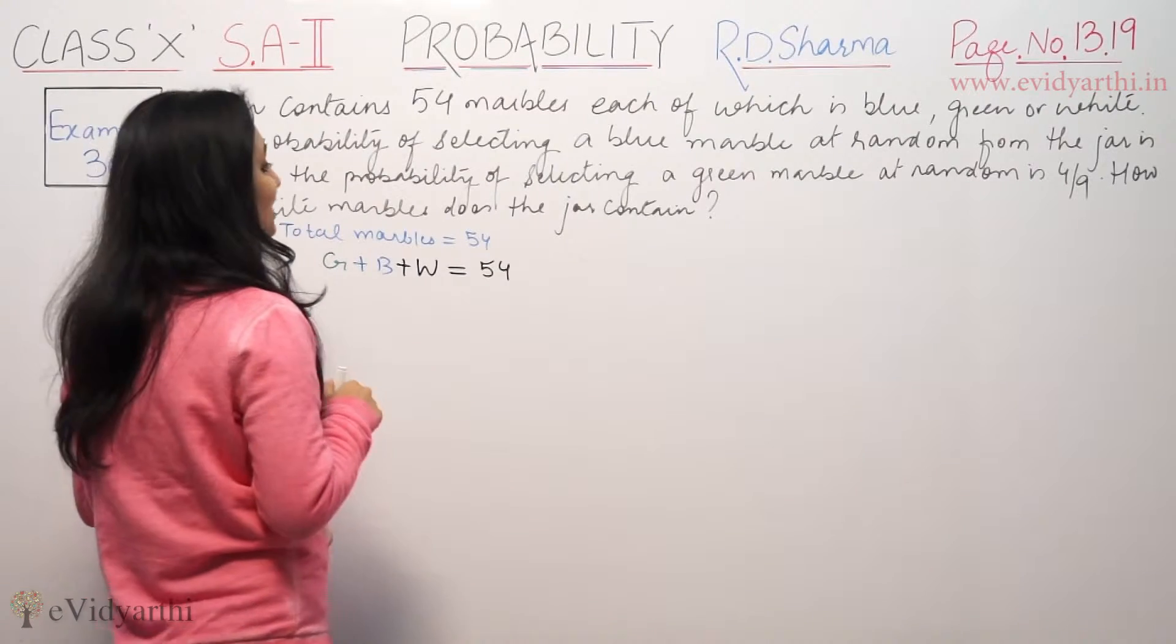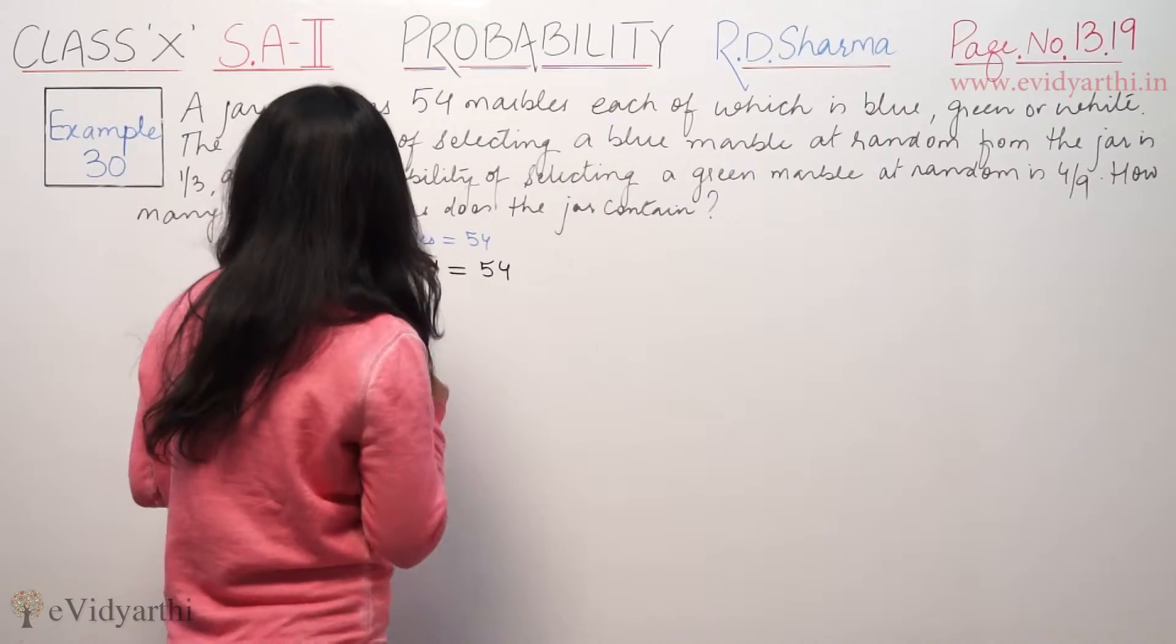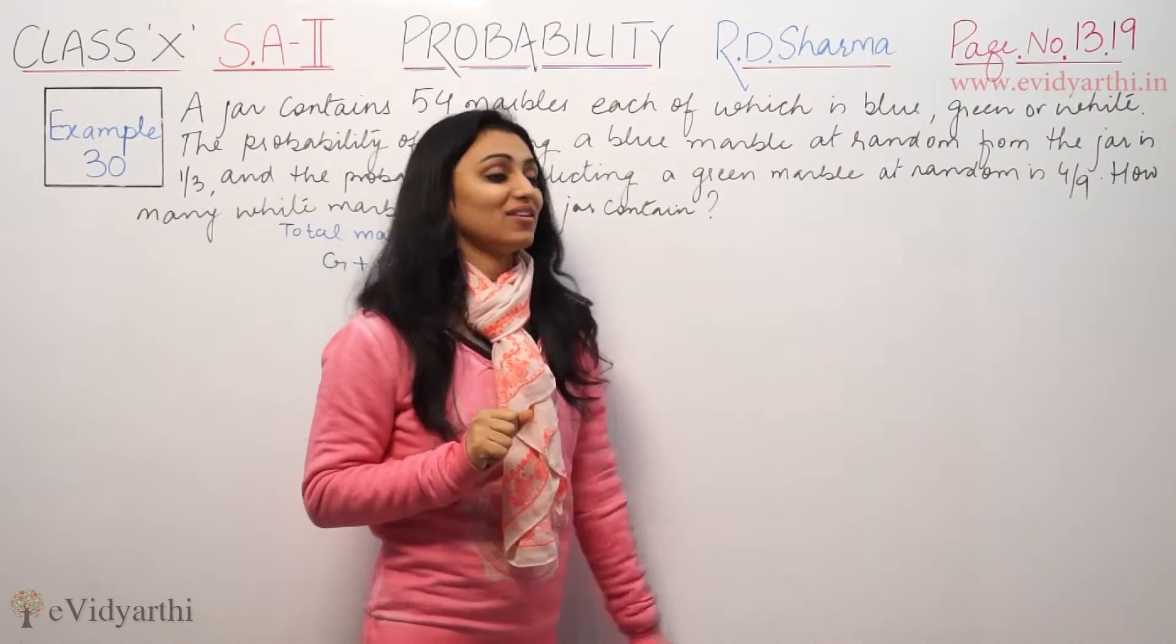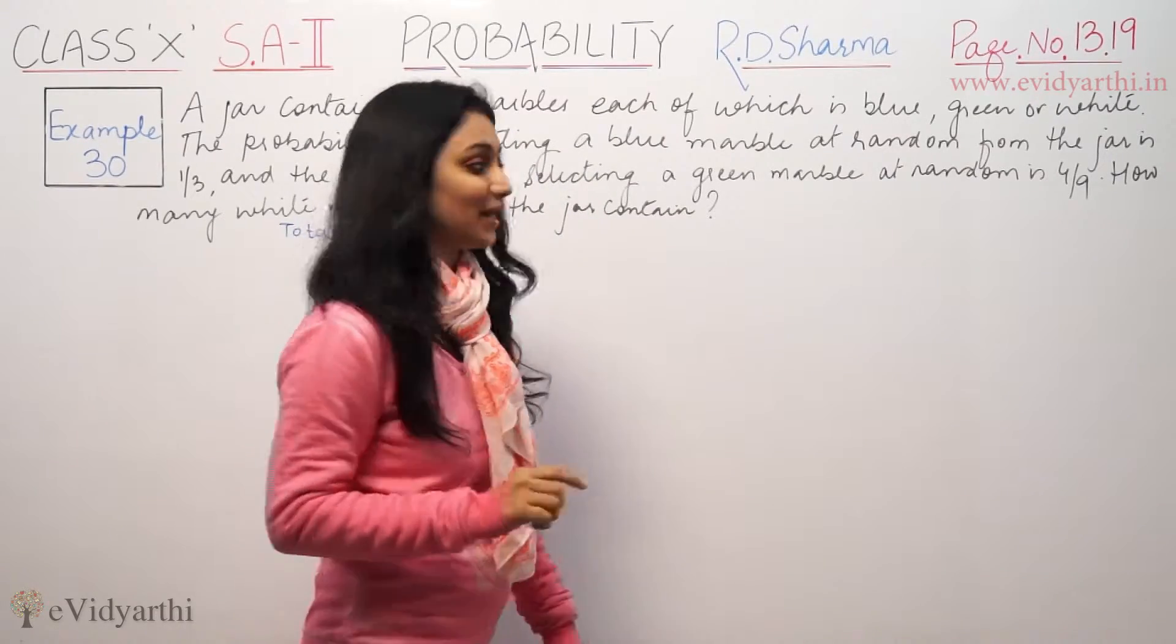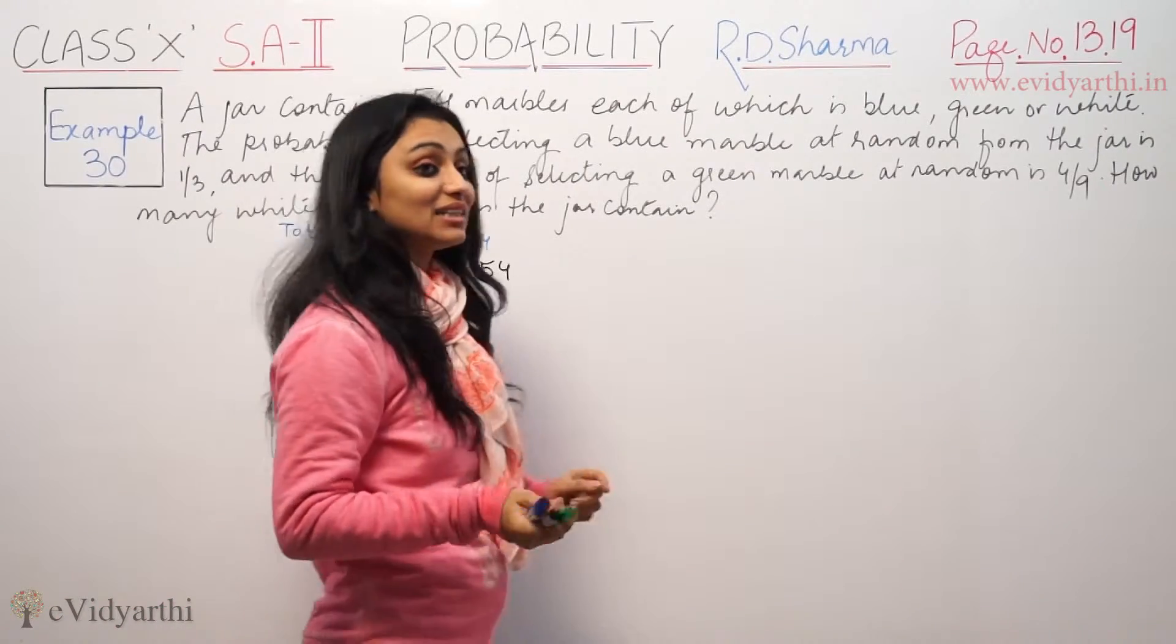Now it says the probability of selecting a blue marble at random from the jar is 1/3, the probability of selecting a green marble at random is 4/9. How many white marbles does the jar contain?